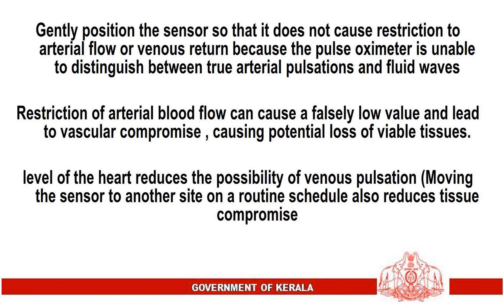Gently position the sensor so that it does not cause restriction to arterial flow or venous return. The pulse oximeter is unable to distinguish between arterial pulsations and fluid waves — restriction of arterial blood flow can cause a falsely low value and lead to vascular compromise with potential loss of viable tissues. Positioning the sensor at the level of the heart reduces the possibility of venous pulsation. Moving the sensor to another site on a routine schedule also reduces tissue compromise.